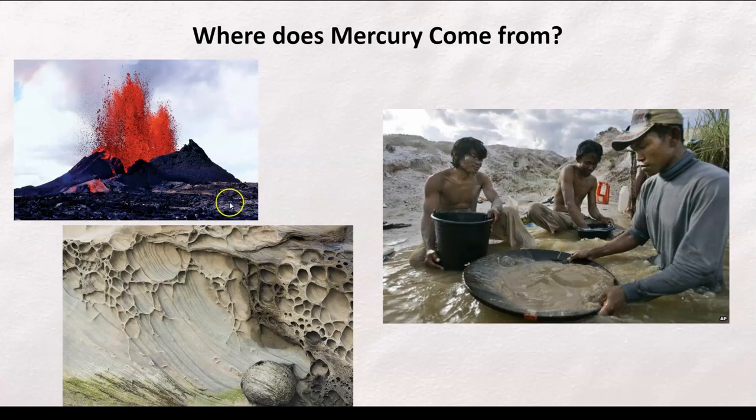It comes from geothermal activity, such as volcanoes, weathering of rocks, which is the degradation of rocks through rain, fossil fuel combustions, smelting activities, mining for mercury, gold, and other metals. Human activities have doubled or tripled the amount of mercury in the atmosphere, and the atmospheric burden is increasing by 1.5% per year.